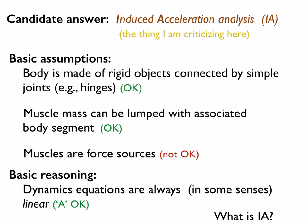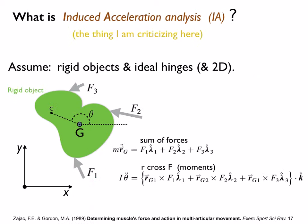So the candidate answer is induced acceleration analysis. It makes the robotic model of a body, like we do mostly in biomechanics. It lumps the muscle mass with the body mass. It thinks of the muscles as force sources, which I think is not okay. The basic reasoning is that dynamics equations are always linear—this is maybe surprising to some people. So this is a clever aspect of induced acceleration analysis, which I'll explain now.